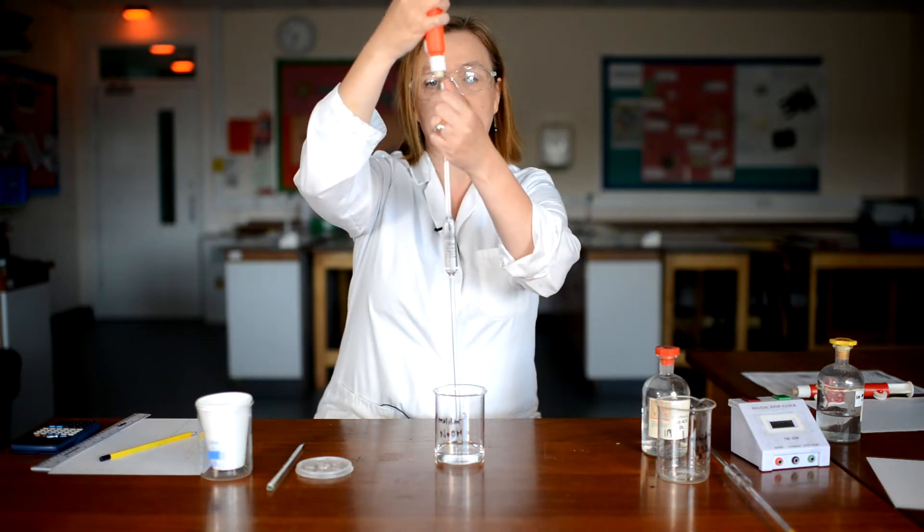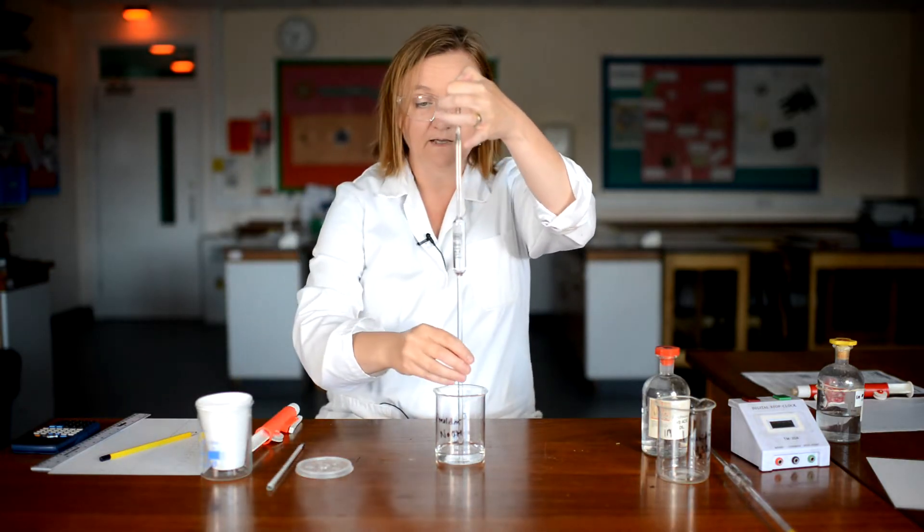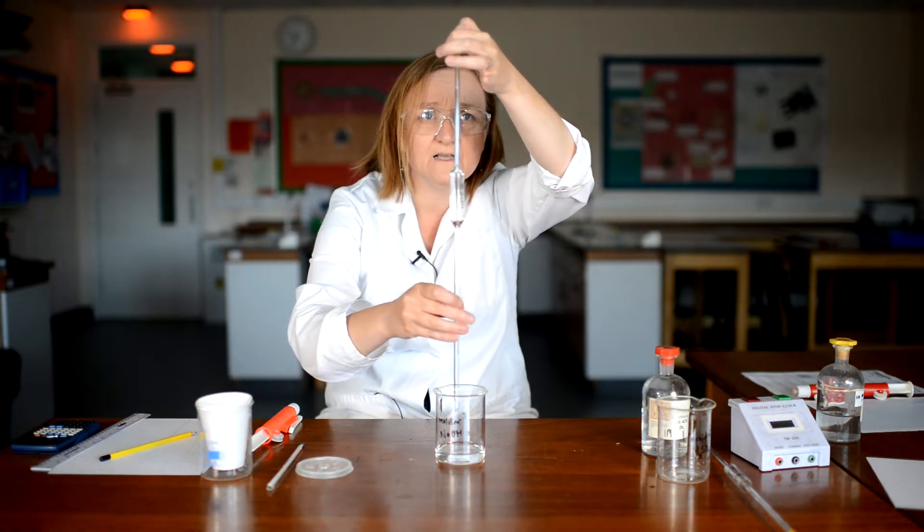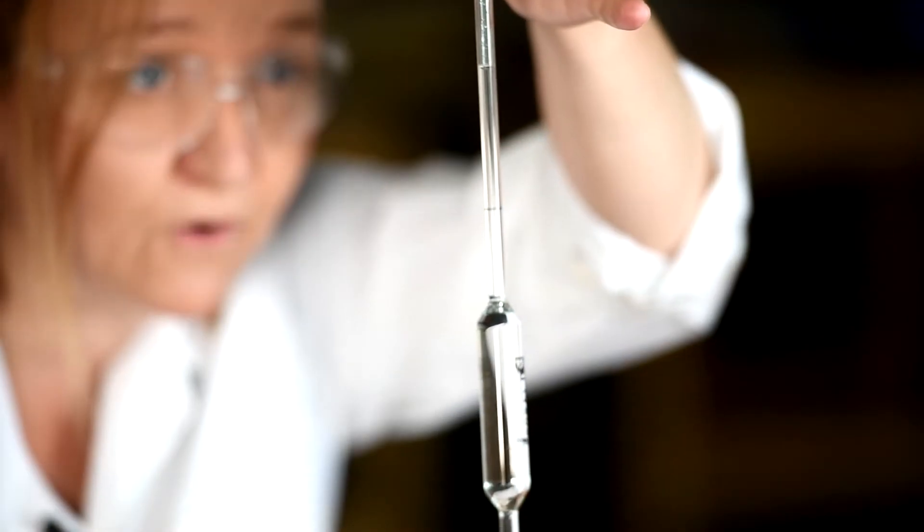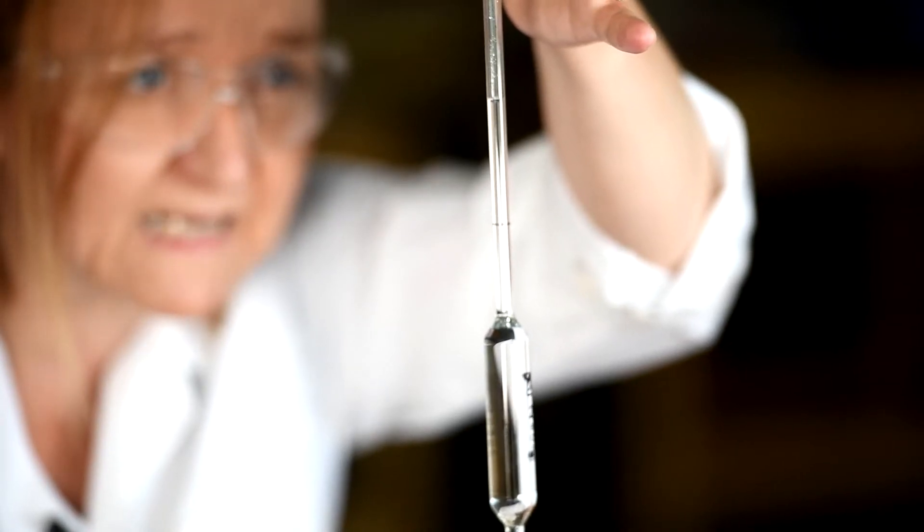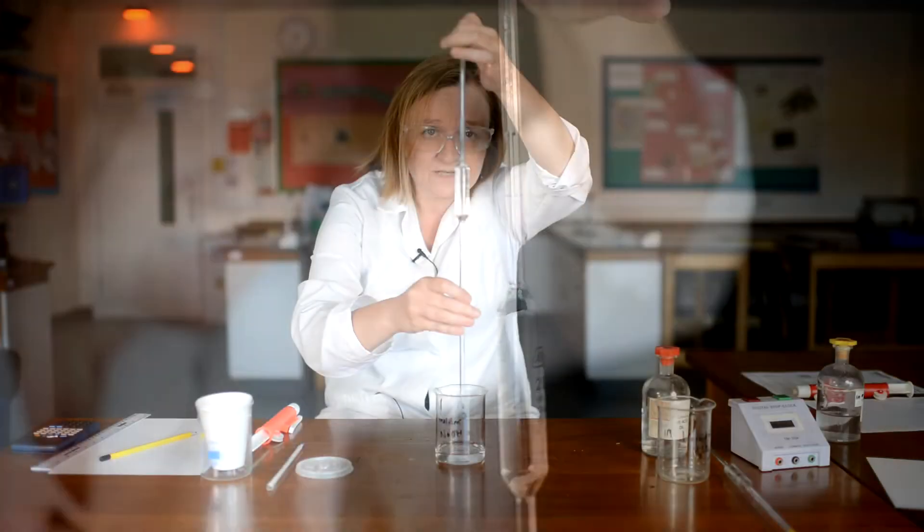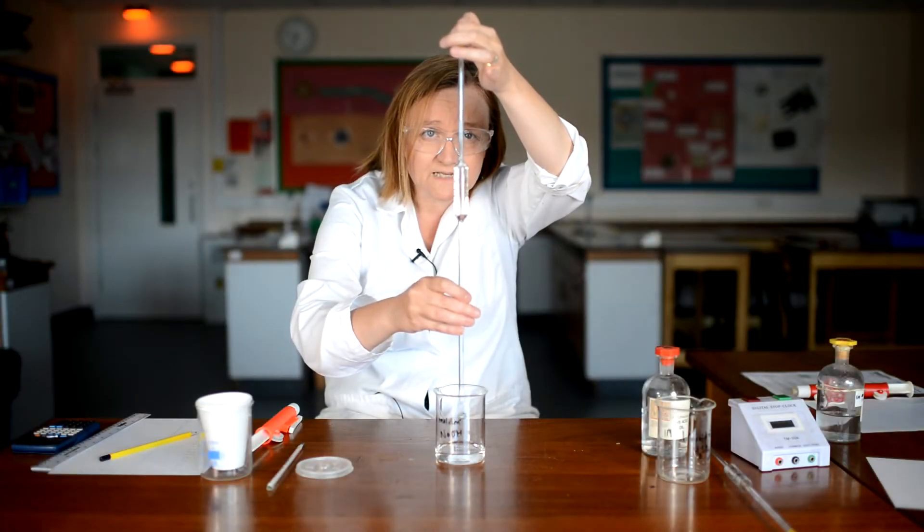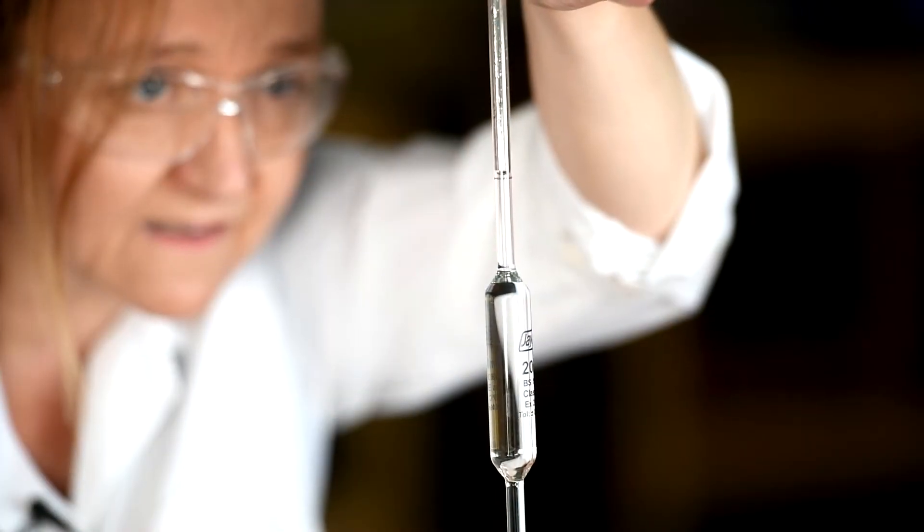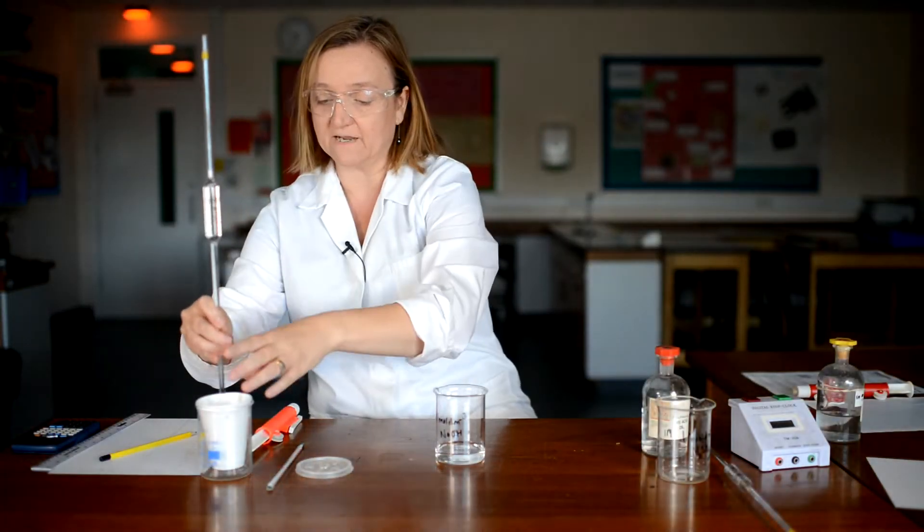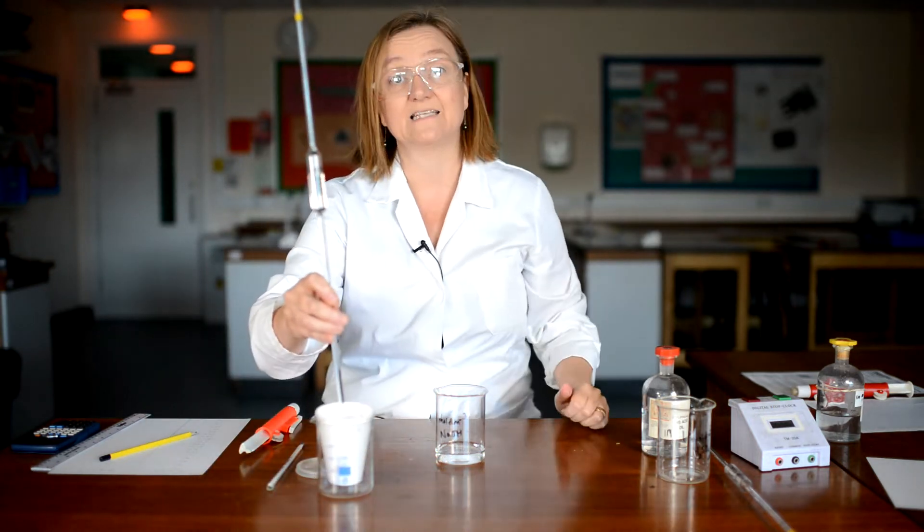I can then take that off, put my thumb on and then looking at eye level, I'm just going to twist gently so that the level in the pipette drops. We've got a really clear meniscus and I want to bring it down so the bottom of the meniscus is just sitting on the line like that. And then I'm going to transfer that into my cup and let it drain in.